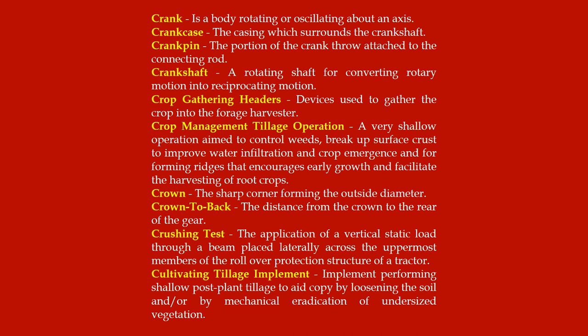Crop management tillage operation: a very shallow operation aimed to control weeds, break up surface crust, improve water infiltration and crop emergence, and for forming ridges that encourage early growth and facilitate the harvesting of root crops. Crown: the sharp corner forming the outside diameter. Crown to back: the distance from the crown to the rear of the gear. Crushing test: the application of a vertical static load through a beam placed laterally across the uppermost members of the rollover protection structure of a tractor.